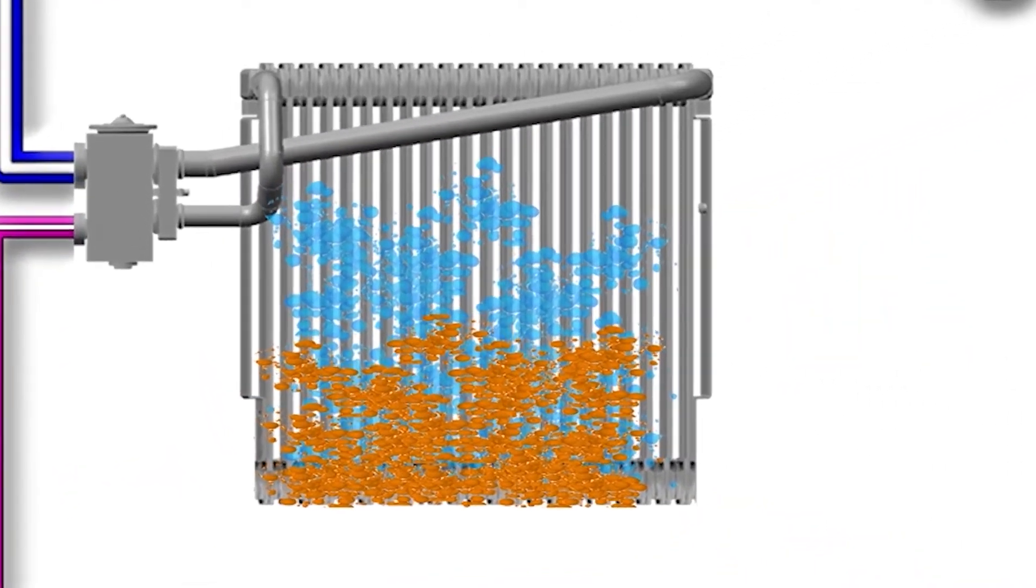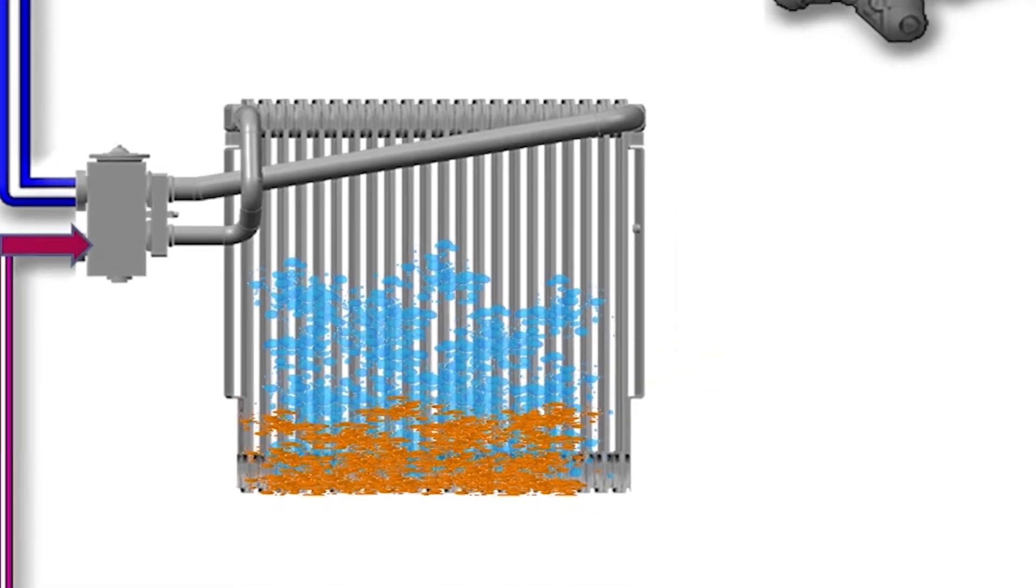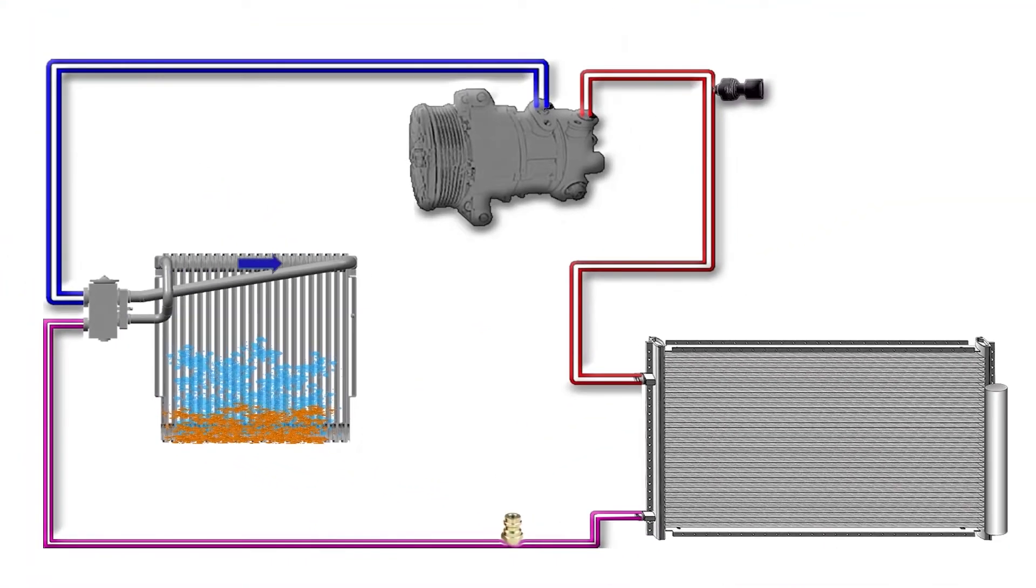As we are illustrating here in this animation, as the vehicle ages and more oil drops out in the evaporator, less and less oil returns to the compressor.